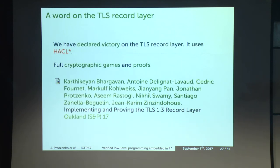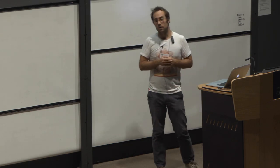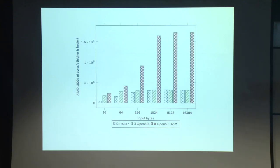Finally, going back to the TLS record layer: we have recently declared victory on the record layer part of TLS — it's all verified and uses HACL*. It has a full cryptographic games proof development, and there's also a paper on the specific cryptographic proofs performed on the constructions. The AEAD construction at the core of the record layer shows comparable or better performance than the OpenSSL C version, with the OpenSSL assembly version still faster.